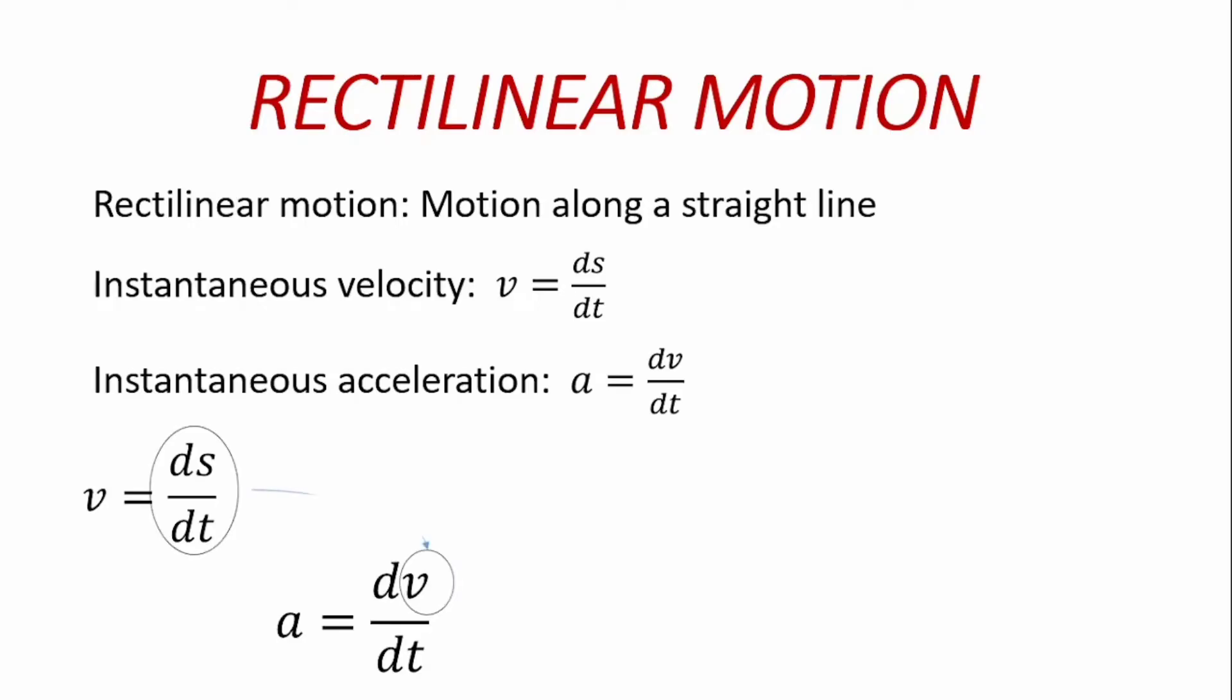So these two equations, if we bring them together, if we place the value of v in the acceleration term with its value, we'll get that a is equal to d/dt of ds/dt. And this can be written as a is equal to d²s/dt². That is to say acceleration is also equal to the second derivative of displacement with respect to time.